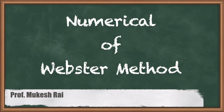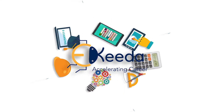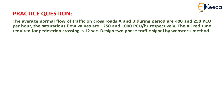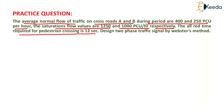Hello students, today we are going to solve a numerical using Webster's method. The question is: the average normal flow of traffic on crossroads A and B during the period are 400 and 250 passenger car units per hour. The saturation flow values are 1250 and 1000 passenger car units per hour respectively. The all-red time required for pedestrian crossing is 12 seconds. Design a two-phase traffic signal by Webster's method.